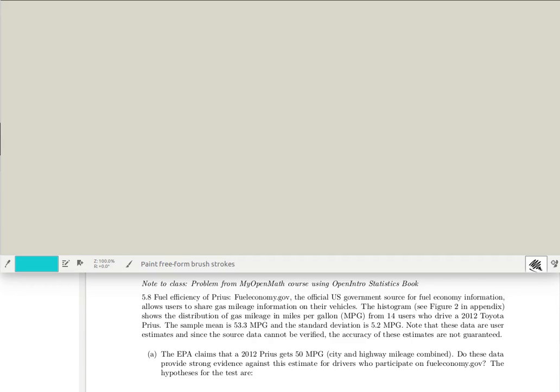This is a problem about fuel economy for the 2012 Priuses. A sample is taken of 14 users who report the average of their miles per gallon is 53.3 with a standard deviation of 5.2 in that sample. The EPA, on the other hand, claims that the 2012 Prius gets 50 miles per gallon.